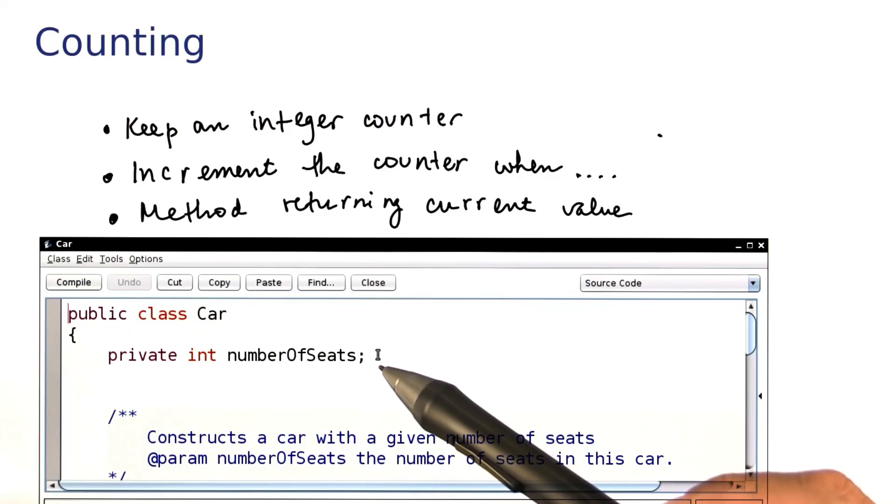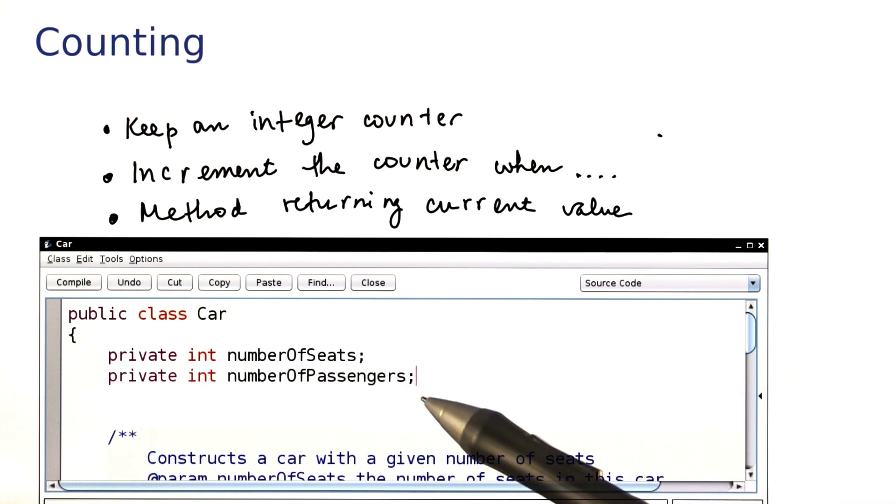Our task is to add an instance variable that counts the number of passengers. Here it is.